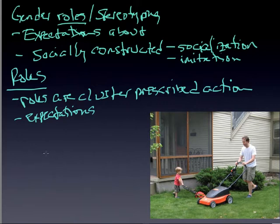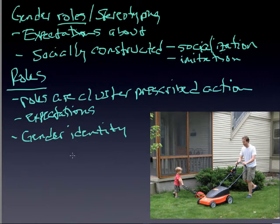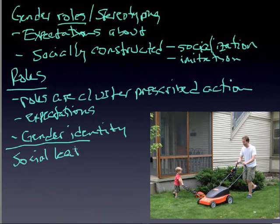Society assigns each of us to a social category that we refer to as male or female, and the result is what I referred to earlier in terms of gender identity. When we disconnect this from biological anatomy and biological determination, then suddenly this whole idea of identity is up for grabs. One of the key ways that we learn it is through something extremely powerful called social learning theory.